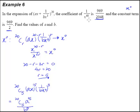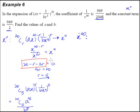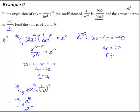Now let's move on to find the term with x to the power of negative 4t. We can recycle everything we've done here because it's the same general term for the same expansion. The only difference is that instead of wanting x to the power of 0, I want x to the power of negative 4t. So I simply take this expression and equate it to negative 4t instead of 0. We get 20 minus 4r equal to negative 4t, so 4r equals 60, and therefore r must equal 15.